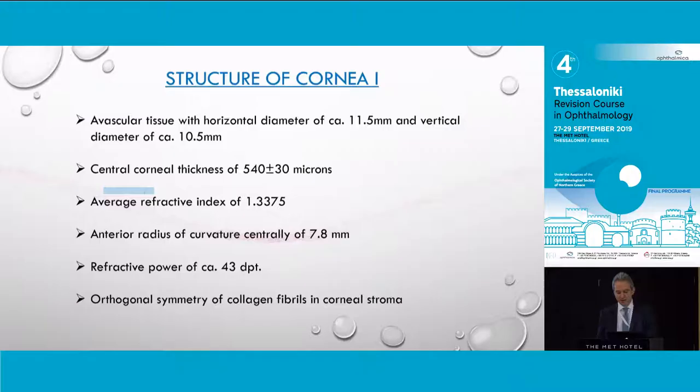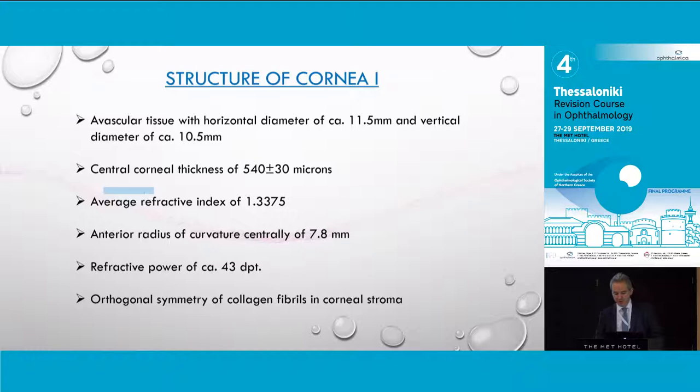The corneal tissue is an avascular transparent tissue with a thickness of 540–550 microns plus or minus standard deviation, and a refractive power of 43 diopters, being the most important optical medium of the eye together with the lens.